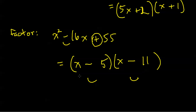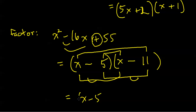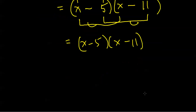We can check it, at least in our heads. x squared is the first product. Minus 11x is my outer product. Minus 5x is my inner product, and those do add up to negative 16x. The last product is positive 55. Be careful of the signs — things get complicated when negative signs creep in. So x minus 5 times x minus 11 is your final answer.